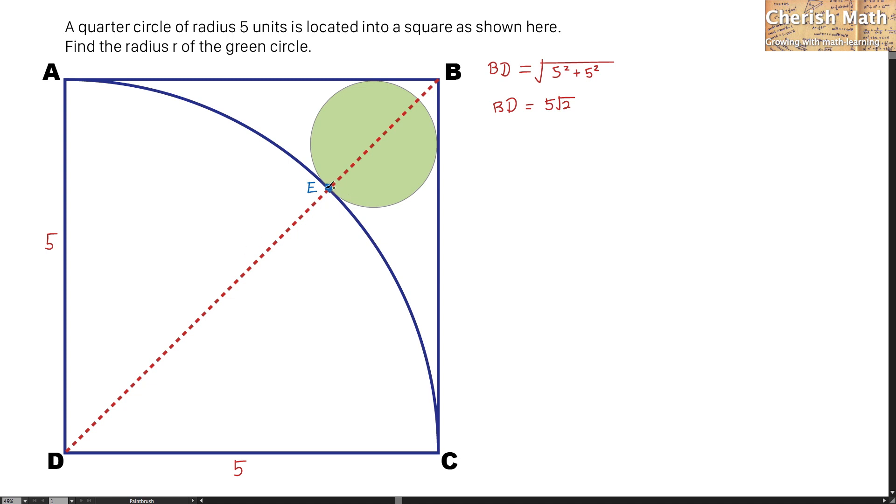When you look at the line E to D, that is the radius of the quarter circle which is 5 units. Now I'm going to find what is the value of BE.